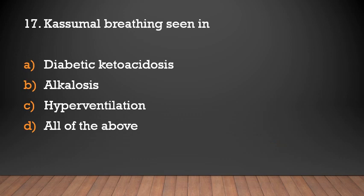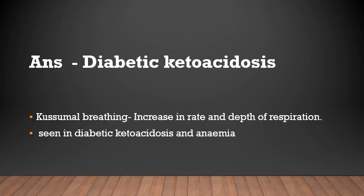Kussmaul breathing is seen in: diabetic ketoacidosis, alkalosis, hyperventilation, or all of the above? The answer is diabetic ketoacidosis. Increased rate and depth of respiration is known as Kussmaul breathing, and it is seen in diabetic ketoacidosis and anemia.